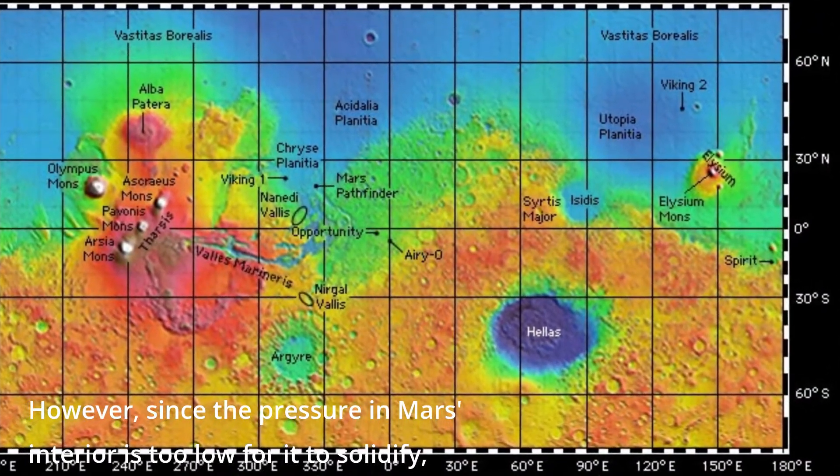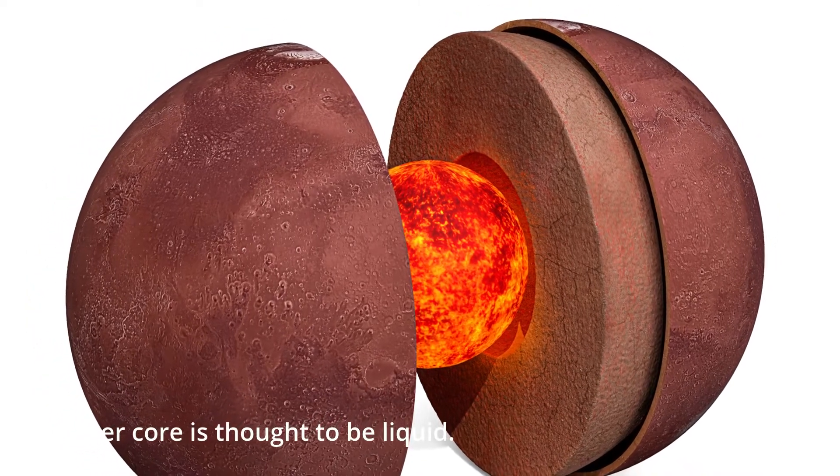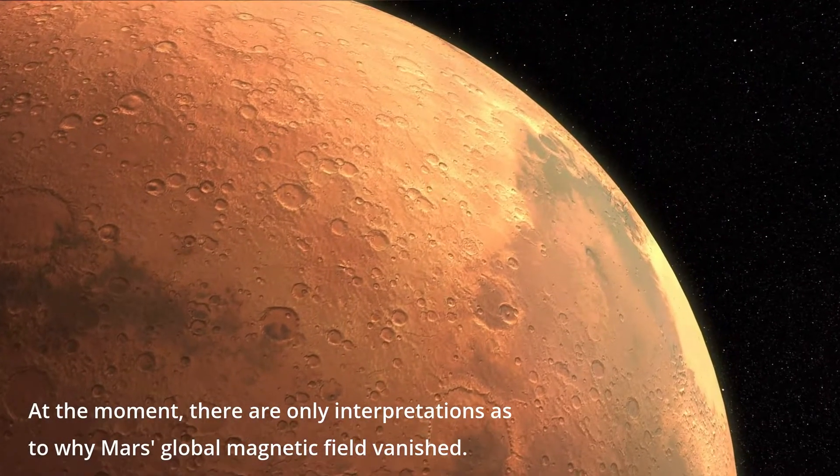However, since the pressure in Mars' interior is too low for it to solidify, its inner core is thought to be liquid. At the moment, there are only interpretations as to why Mars' global magnetic field vanished.